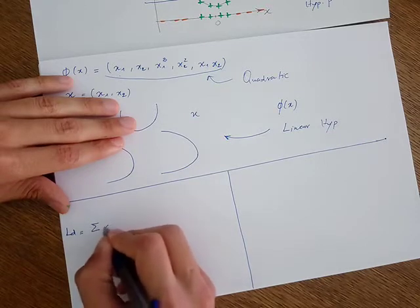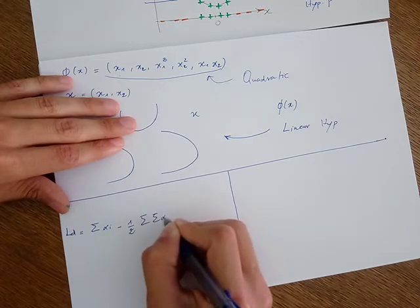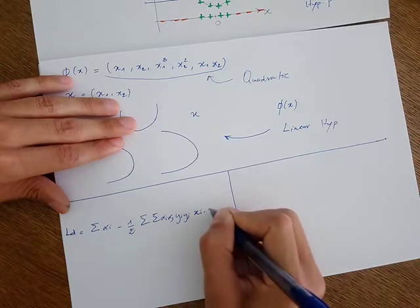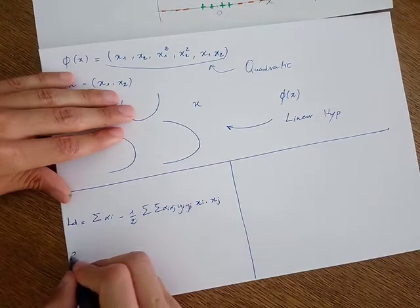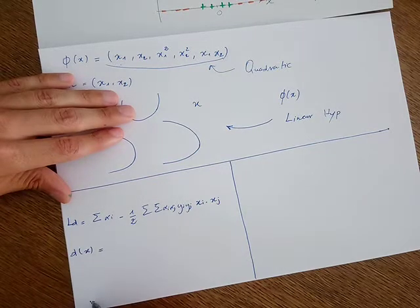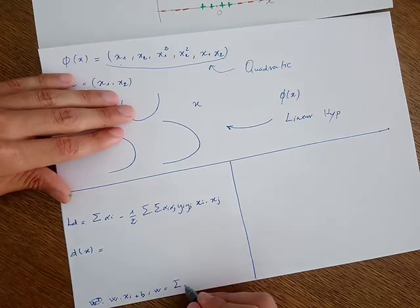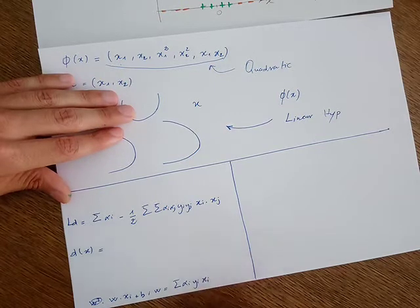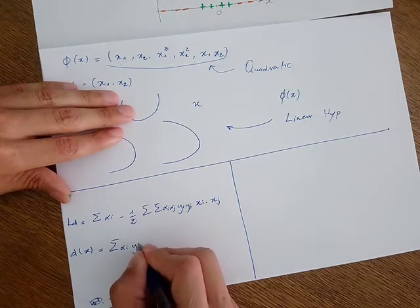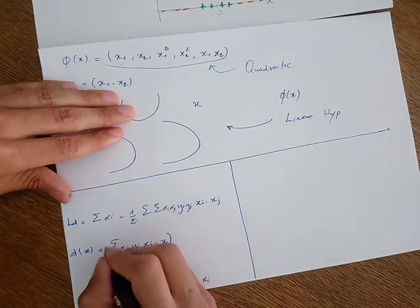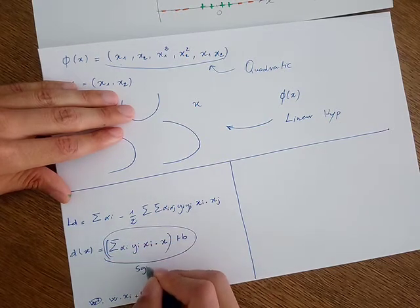Let me recall this expression. It was equal to the summation of alpha_i minus one-half times the summation of alpha_i · alpha_j · y_i · y_j · (x_i dot x_j). And the decision rule was w transpose dotted with x_i plus b, where w equals the summation of alpha_i · y_i · x_i. Substituting, the decision rule becomes: summation of alpha_i · y_i · (x_i dotted with the new sample to classify) plus b. We care about the sign of this expression.